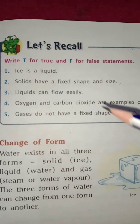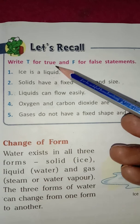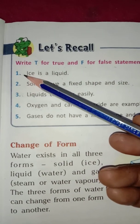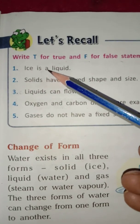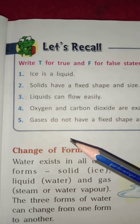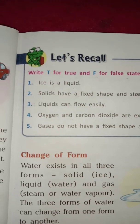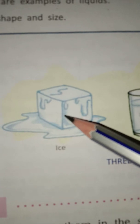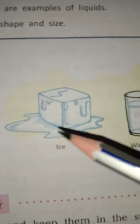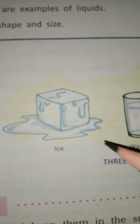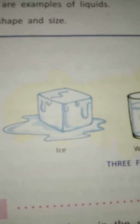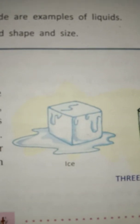Today we will do true and false. The first statement is: ice is a liquid. Ice is a liquid. Students, ice is a solid. You can see here — ice is a solid. Ice is not in liquid form. It changes into liquid when heated. So ice is a solid form.